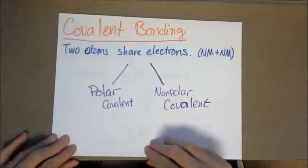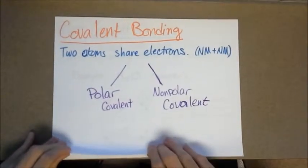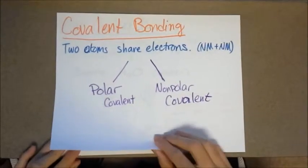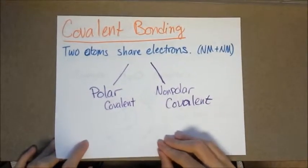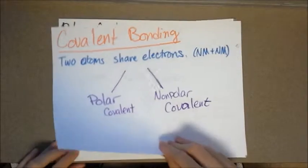So next we're going to look at covalent bonding, which has two types, polar covalent and non-polar covalent. In covalent bonding, two atoms share the same electrons. In general, these are going to occur between a non-metal and another non-metal.